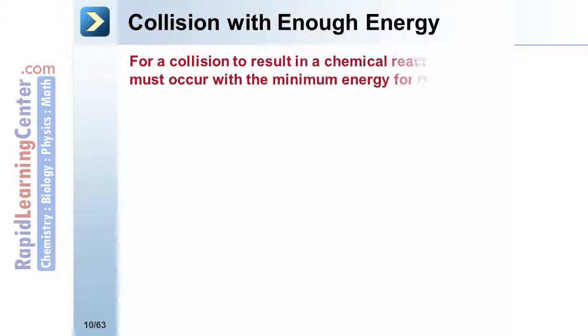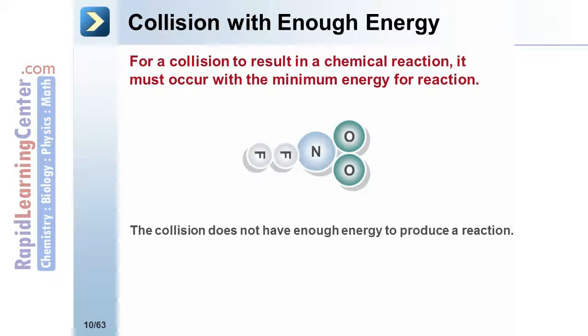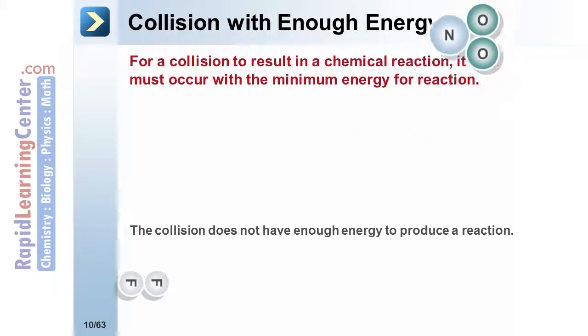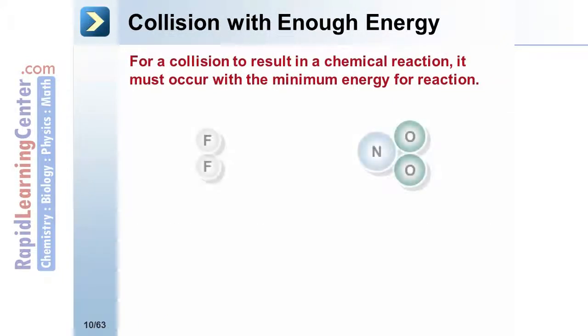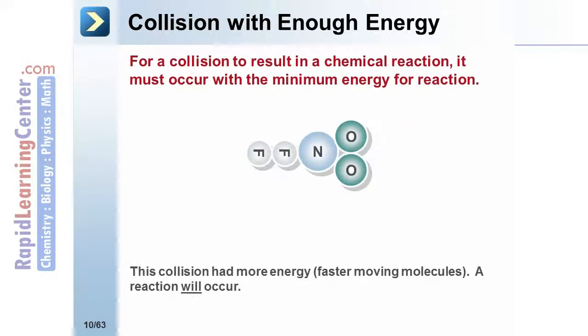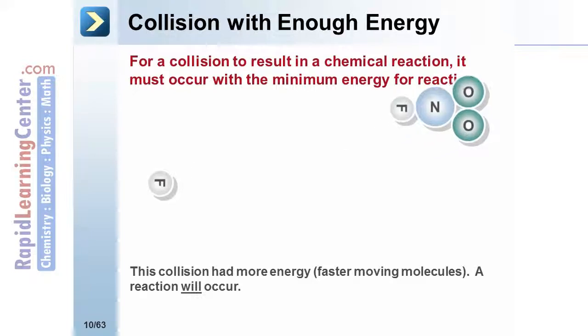Even when a collision has the correct orientation, it also must have the minimum energy to transform into the reactants. For example, these molecules do collide with the correct orientation. However, their energy is very low. No reaction takes place. This set of molecules collides with greater energy. A reaction will take place.